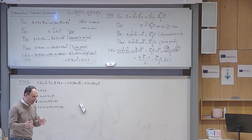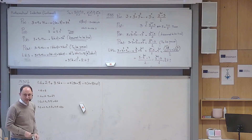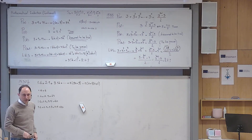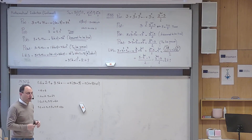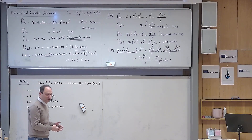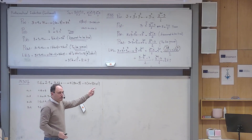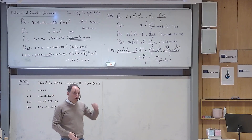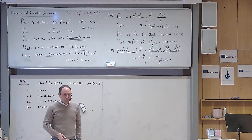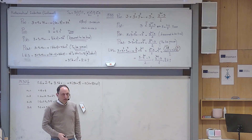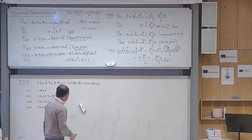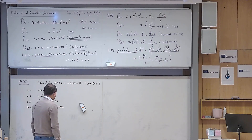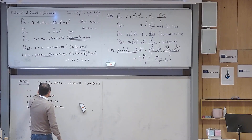You cannot start mathematical induction without a right-hand side. If you want to find the formula without guessing, you can use sigma notation properties. Write the sum as Σ k(3k+3) for k from 1 to n, factor out 3, expand to get Σ(k² + k), then split into Σk² + Σk — both of which have known formulas.